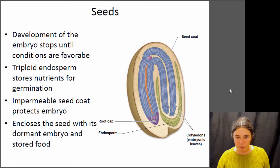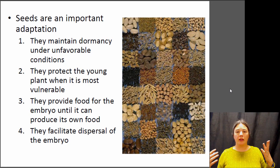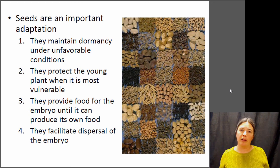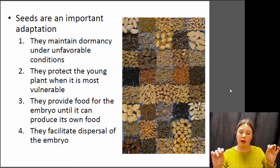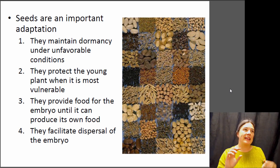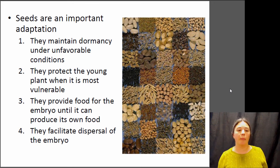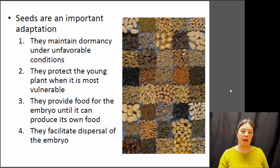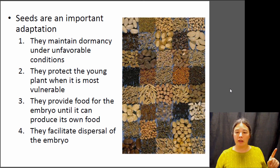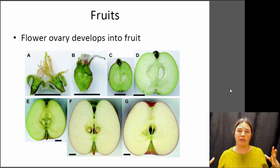Seeds are really important because they protect the young plant when it's most vulnerable. They allow plants to survive harsh periods like winter. Many soft plants can't survive cold conditions — they freeze — so they bloom during summer, produce seeds that fall to the ground and remain dormant through winter, then germinate in the spring. Everything the plant needs to germinate is contained within the seed, and some seeds also help facilitate dispersal of the embryo.